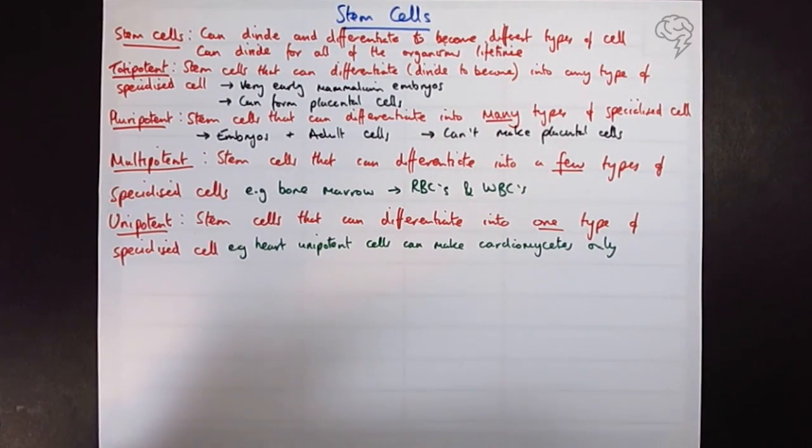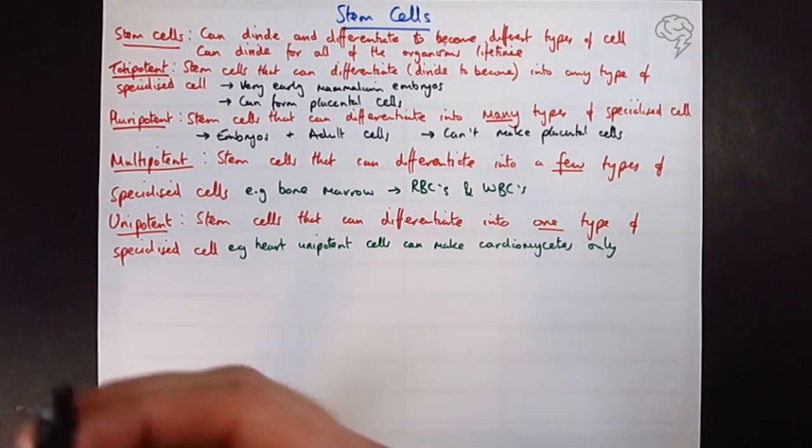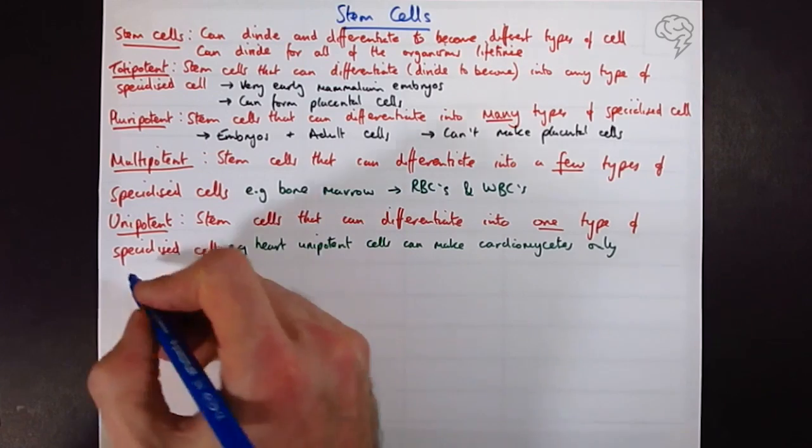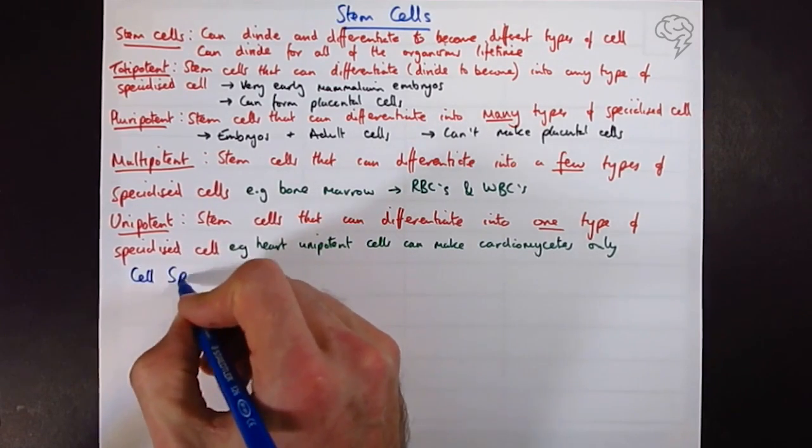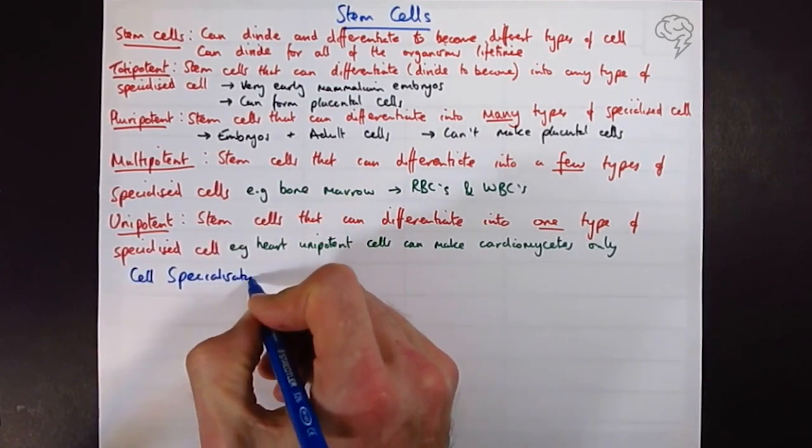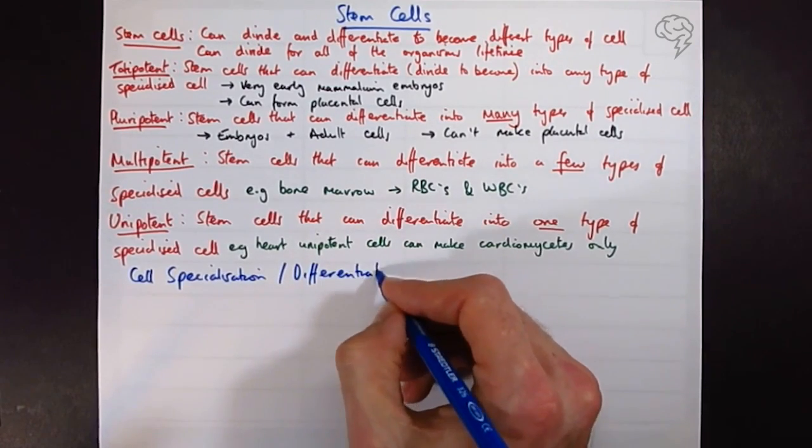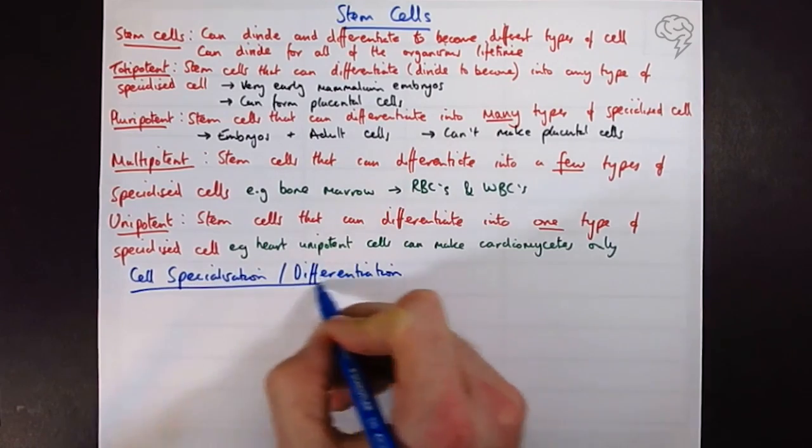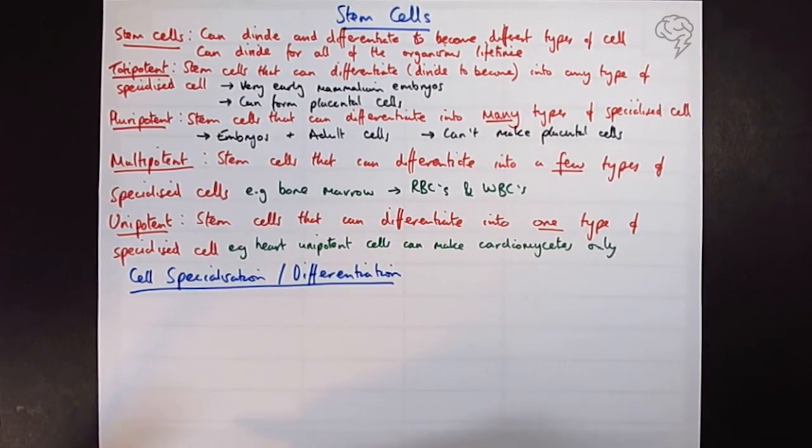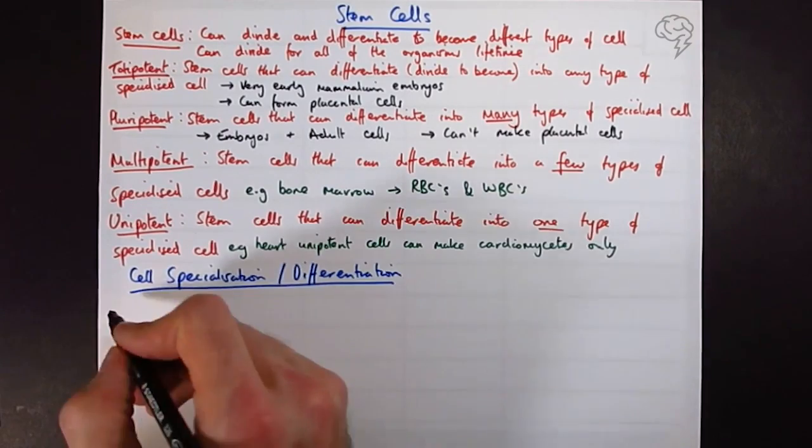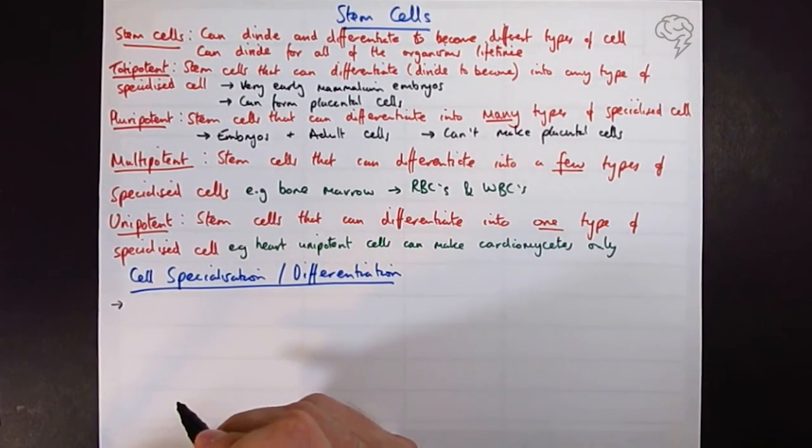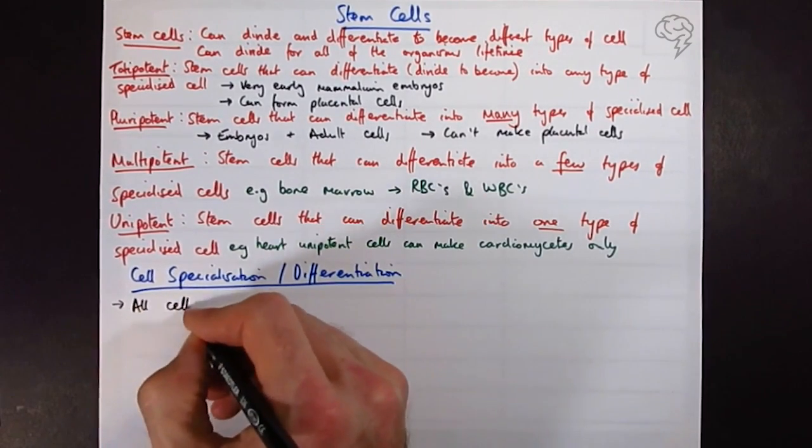They do this if heart tissue is damaged. Obviously myocardial infarction or heart attack might do that. This is new to the specification this year. So what do we need to know about cell specialization or differentiation? All cells contain 100% of the organism's DNA, so every cell has the DNA to make every other kind of cell in theory.